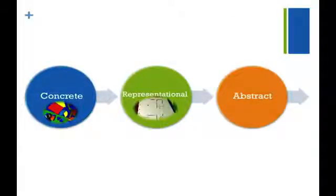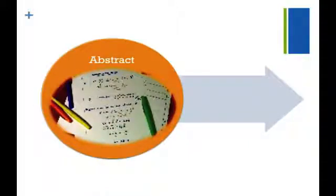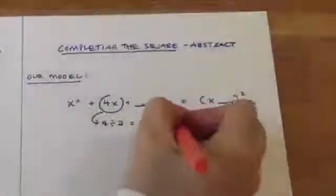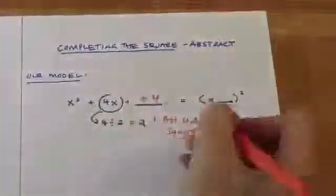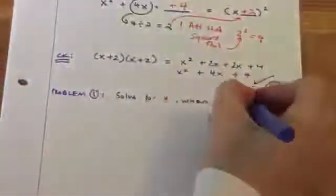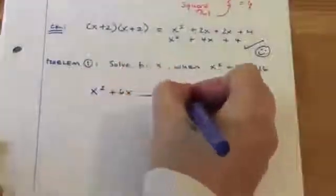The third and final stage of this model is referred to as abstract. The abstract stage requires students to complete the algorithm without any concrete or representational assistance. Here, students apply the algorithm, inheriting the patterns and processes they explored during the concrete and representational stages. Students use mathematical symbols and notation to demonstrate how to solve a completing the square problem in purely algebraic terms.